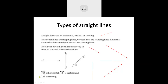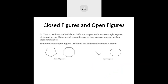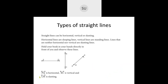So we have three kinds of straight lines: line PQ is horizontal, line RS is vertical, and line LM is slanting. These were the types of straight lines. Now let's solve the questions in your textbook, Exercise 5.1, page 141.